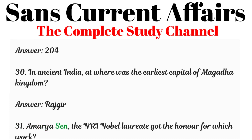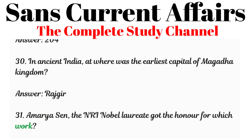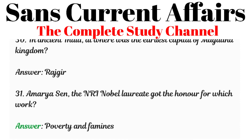Question 31: Amartya Sen, the Indian Nobel laureate, got the honor for which work? Answer: Poverty and Famines.